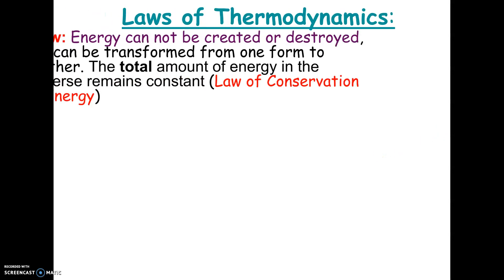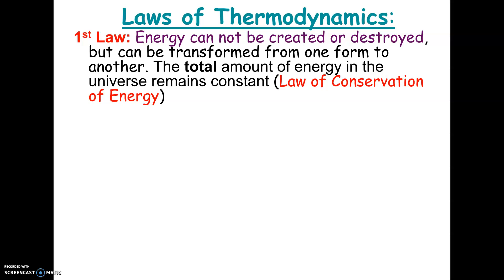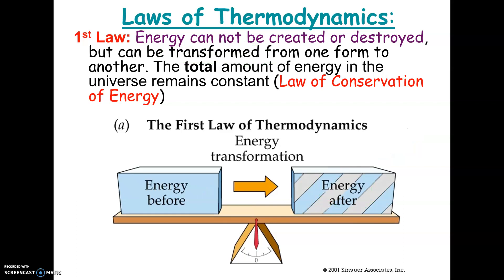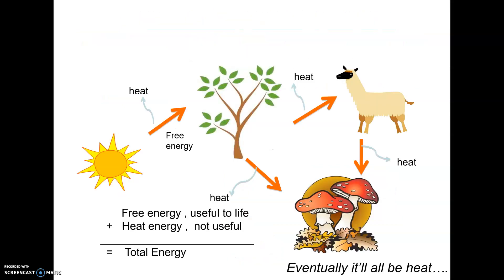There are two laws of thermodynamics you should know. The first one is that energy can't be created or destroyed — the total amount of energy in the universe stays the same. Energy before equals energy after. But that doesn't mean the energy stays in the same form — the important part is that energy gets transformed. Sometimes energy gets turned into a form, like heat, that's not useful to us anymore. So even though the amount of energy is the same, the quality of the energy doesn't stay the same. That's why you have to keep eating — energy is not destroyed, but turned into a form that's not useful to you, so you need to eat more food to extract energy in a useful form.